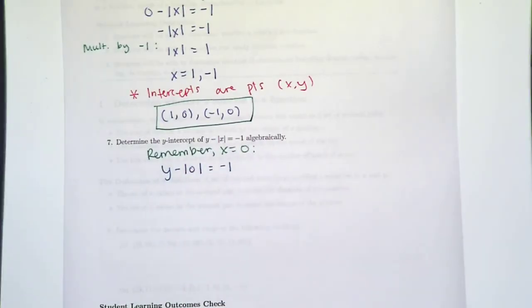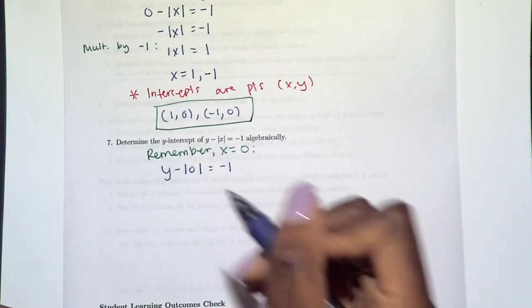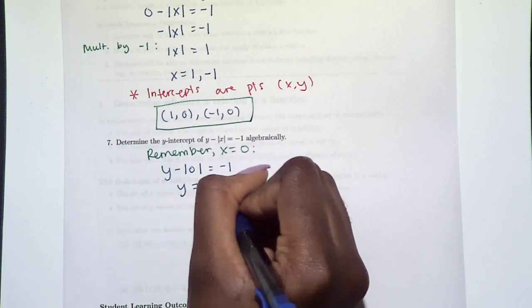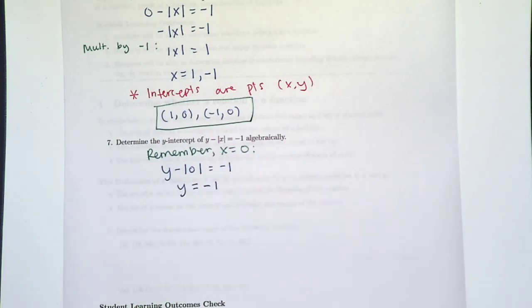And this time we're going to solve for y. So we know the absolute value of zero is just zero. Well, that was quick! We already know that y is -1. So is that the answer? y = -1? No. Remember, intercepts are points (x, y). So we know that y is -1, what's our x?